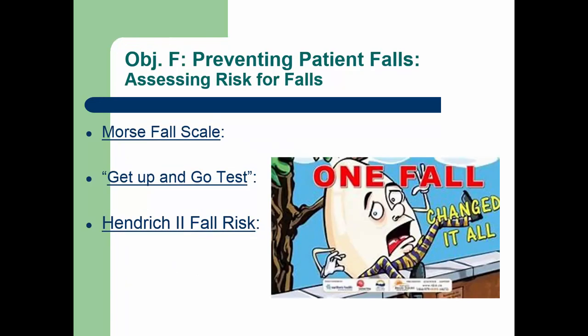Common fall risk tools are the Morse Fall Scale, the Get Up and Go test, and the Hendrick II. The Morse Fall Scale assesses various fall risk variables including history of falling, any secondary diagnoses predisposed to falls, ambulatory aids such as crutches or canes, whether they have an IV in place, how they transfer or ambulate, and their mental status. Patients are scored in each category: 0 to 24 is low risk, 25 to 50 is low or medium risk, and above 55 is high risk. These numbers may vary slightly by organization, but fall risk precautions should be implemented for the low or high fall risk categories.